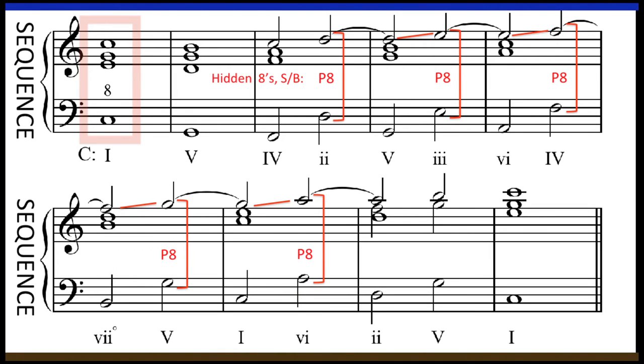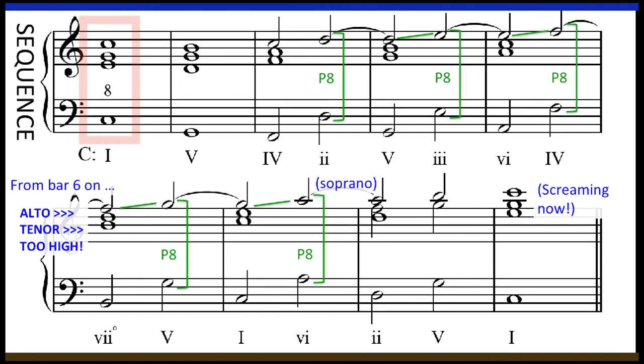By contrast, what happens when we start the soprano with the octave of the bass? Anything wrong here? First of all, this introduces multiple instances of hidden octaves to the sequence between the two outer voices. This is one rule we don't want to bend. If that weren't bad enough, a logical continuation of this sequence eventually leads to violation of the range of the upper voices, and this doesn't work when writing for SATB, that is, for soprano, alto, tenor, and bass.